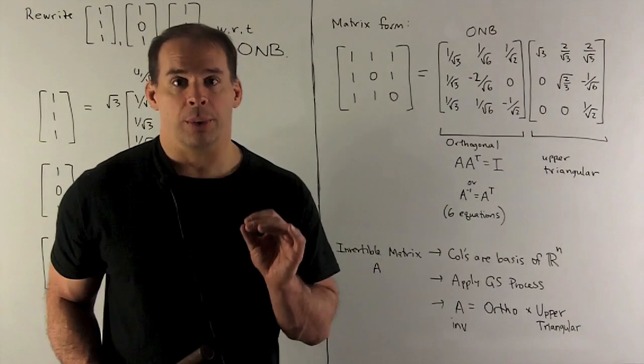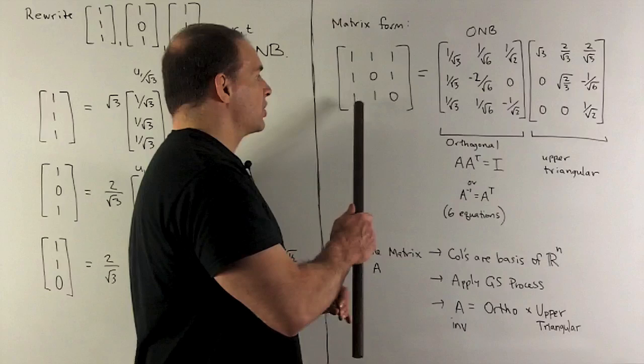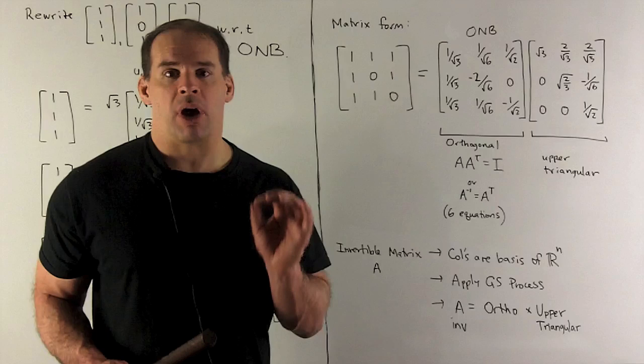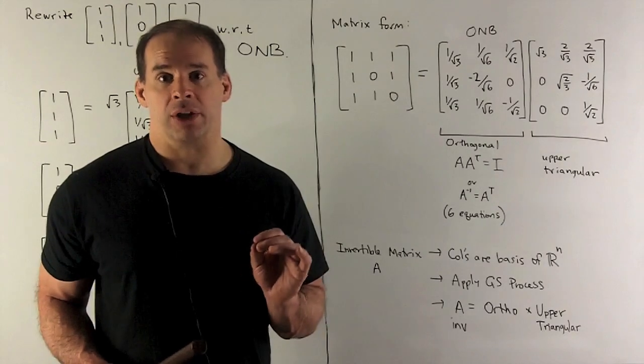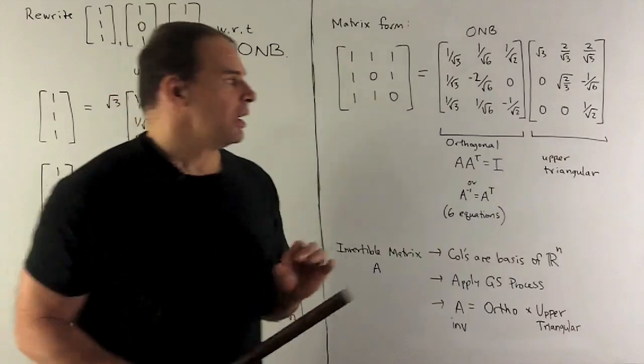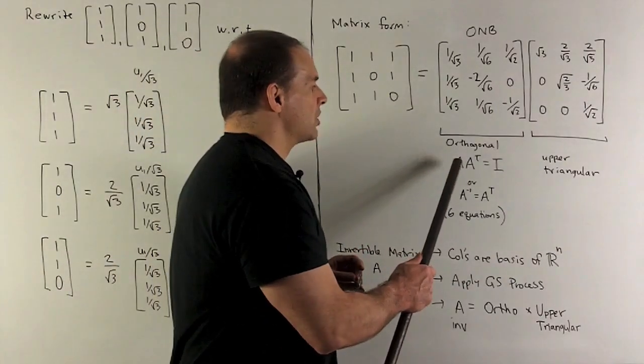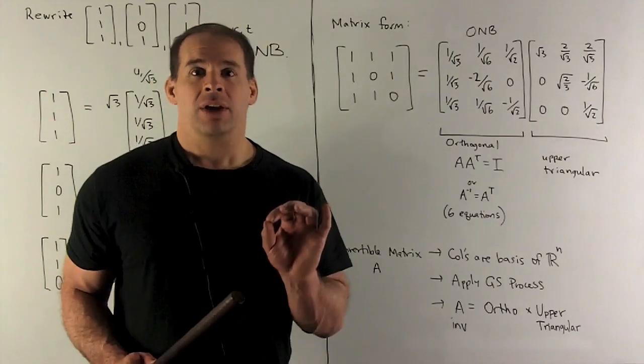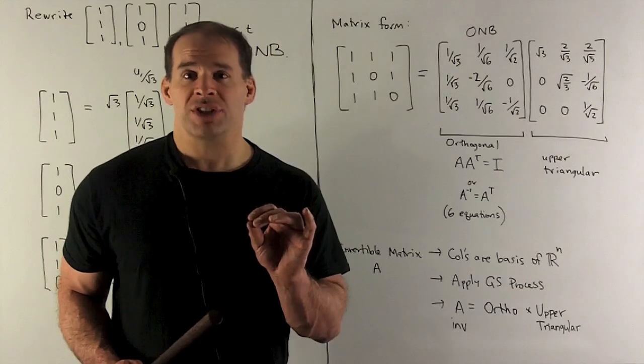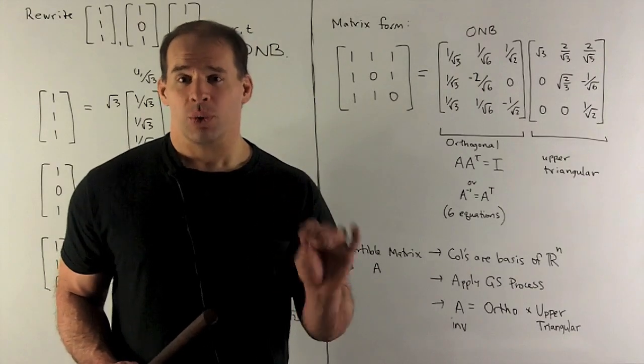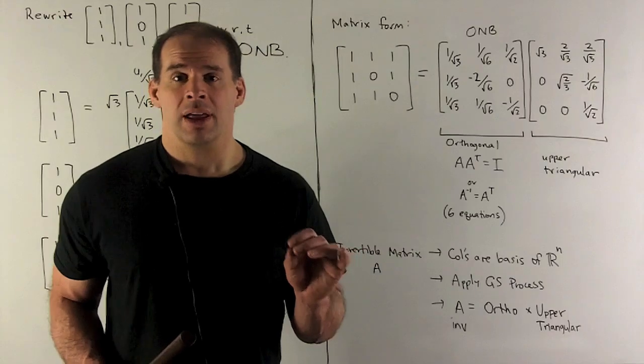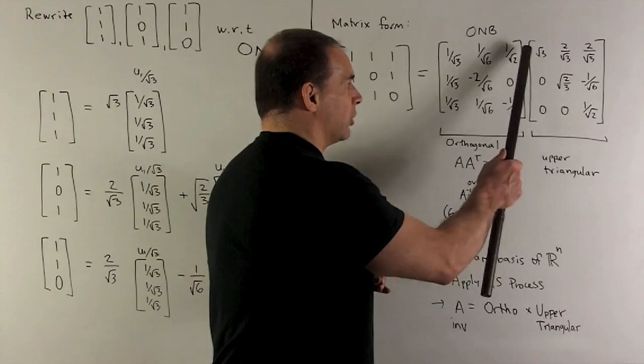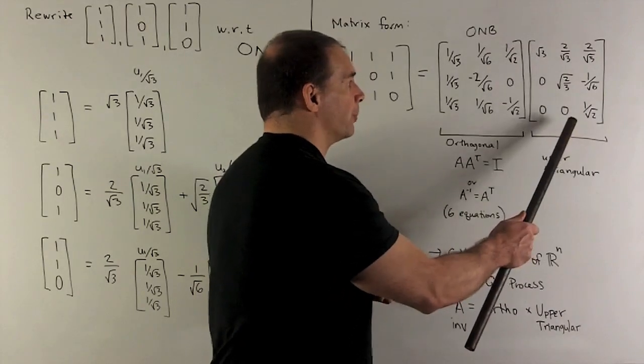Now, what did we just do? We've taken an invertible matrix. It's invertible because its columns form a basis of R³. And I've rewritten it as a product of an orthogonal matrix and an upper triangular matrix. Now, orthogonal, that just means if I take my matrix, multiply it by its transpose, I get the identity. That's nothing fancy. That just comes down to the six equations that we checked to show that our basis was an orthonormal basis. Then, we have an upper triangular matrix. All that says is that if I look below the diagonal, we have all zeros.